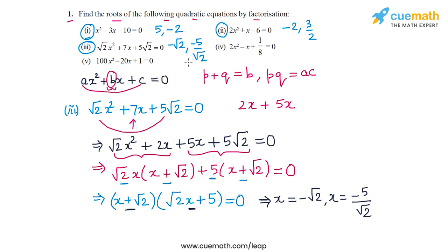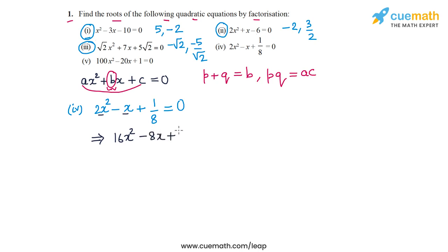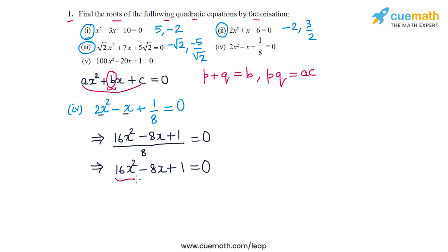Now let's do part 4. The quadratic equation is 2x² - x + 1/8 = 0. To simplify, we multiply through by 8 (taking LCM), giving 16x² - 8x + 1 = 0. We notice that this is a perfect square because 16x² = (4x)², -8x = -2(4x)(1), and 1 = 1².